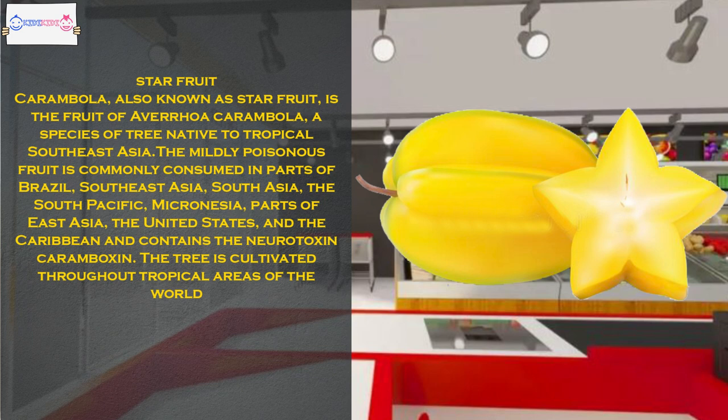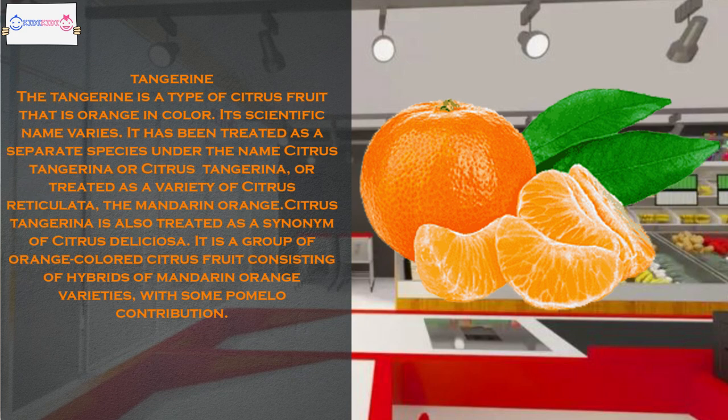The tree is cultivated throughout tropical areas of the world. The tangerine is a type of citrus fruit that is orange in color. Its scientific name varies; it has been treated as a separate species under the name Citrus tangerina, or treated as a variety of Citrus reticulata, the mandarin orange. It is a group of orange-colored citrus fruit consisting of hybrids of mandarin orange varieties, with some pomelo contribution.